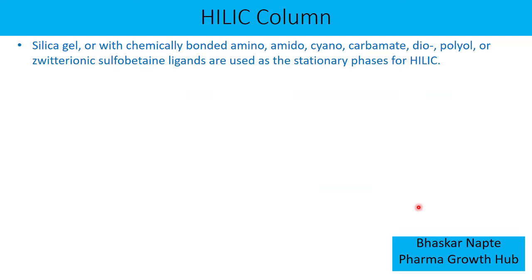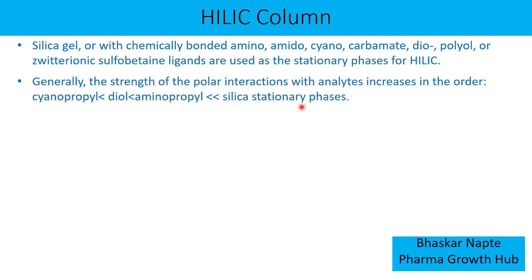What stationary phases can be used as HILIC columns? Bare silica gel containing siloxane or silanol groups can act as a HILIC column. For chemically bonded stationary phases, amino, amido, cyano, carbamate, diol, polyol, or zwitterionic sulfobetaine ligands are used. Regarding the strength of polar interaction: cyanopropyl column shows the weakest interaction, then diol, then aminopropyl, with bare silica being the strongest polar stationary phase in HILIC mode.